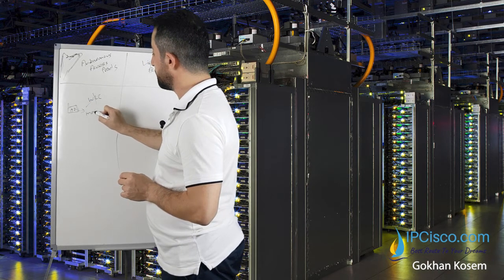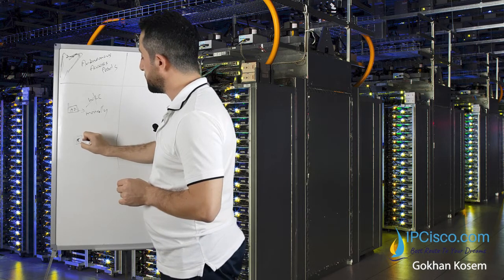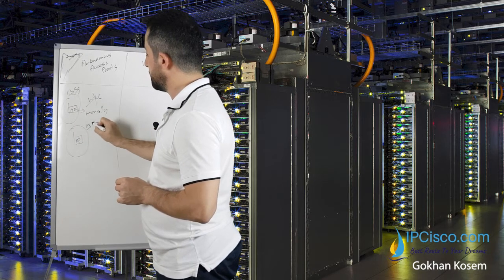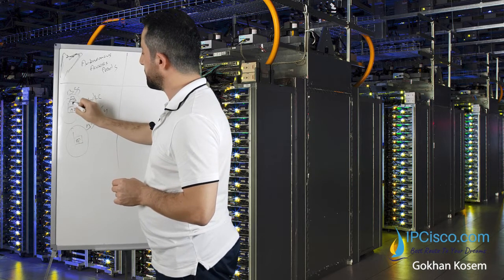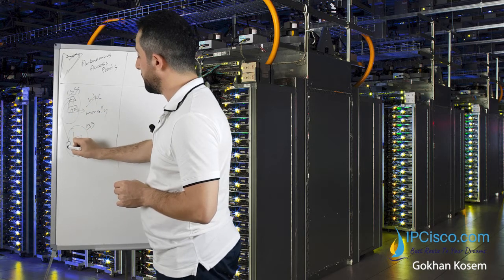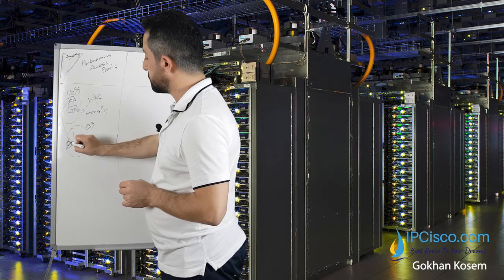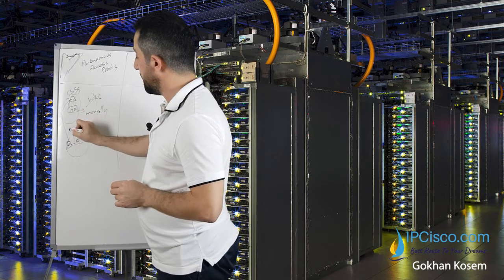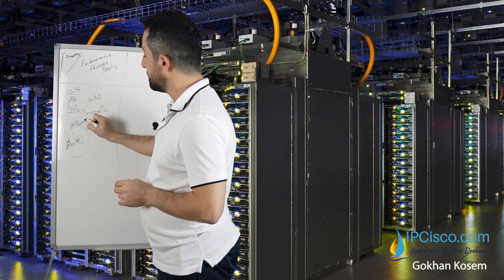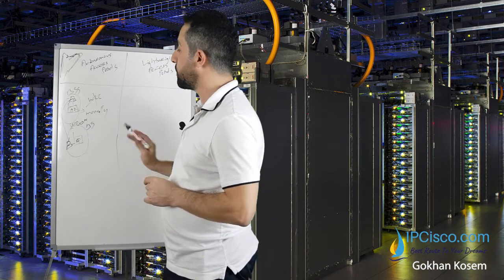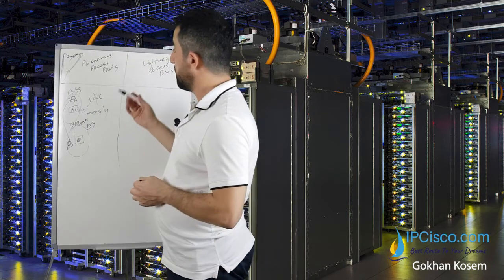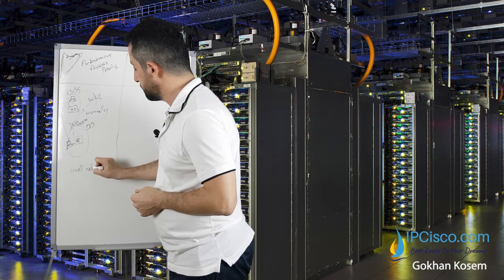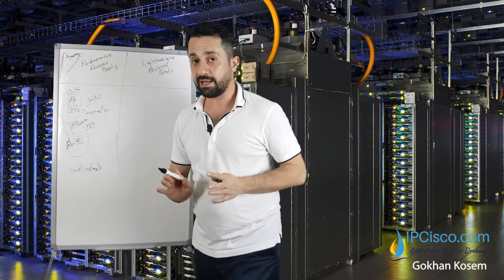With autonomous access points, we need to do the configuration manually. For example, if there is another access point and a device is getting service from one access point and it roams to another, we need to configure the same SSIDs and same VLANs manually. Everything is done manually, which is a difficult job. So autonomous access points are good for small networks; for a big network we cannot use them.